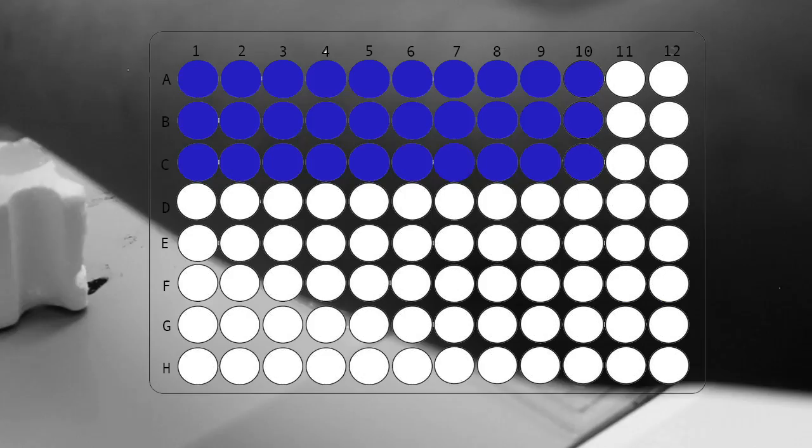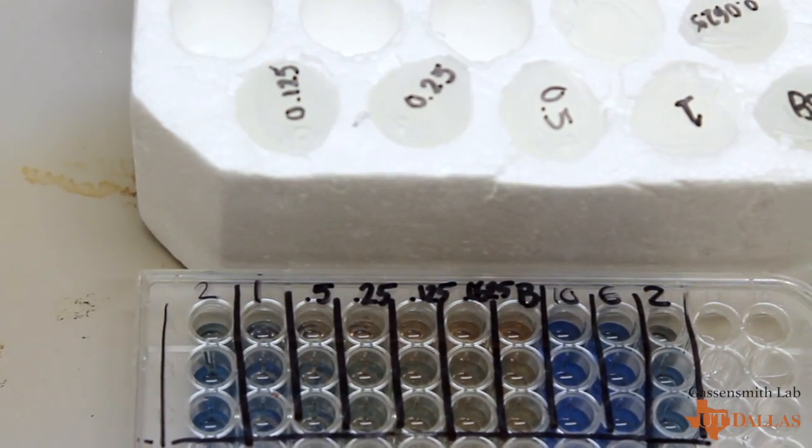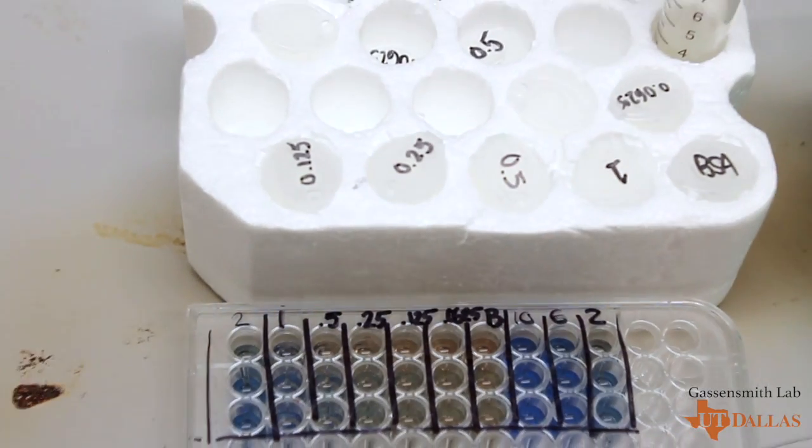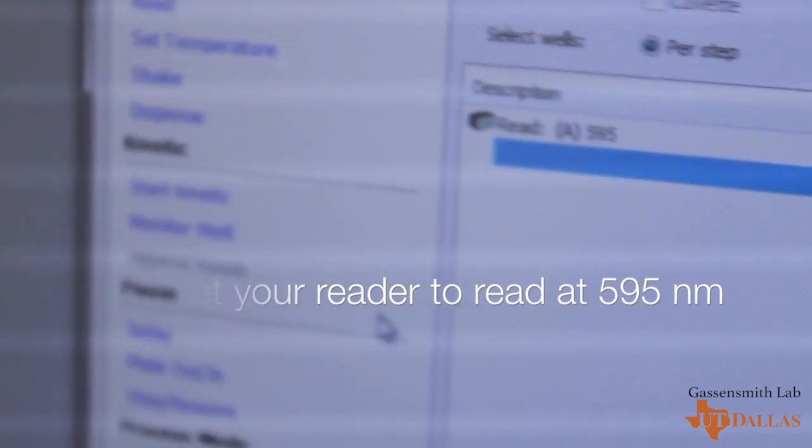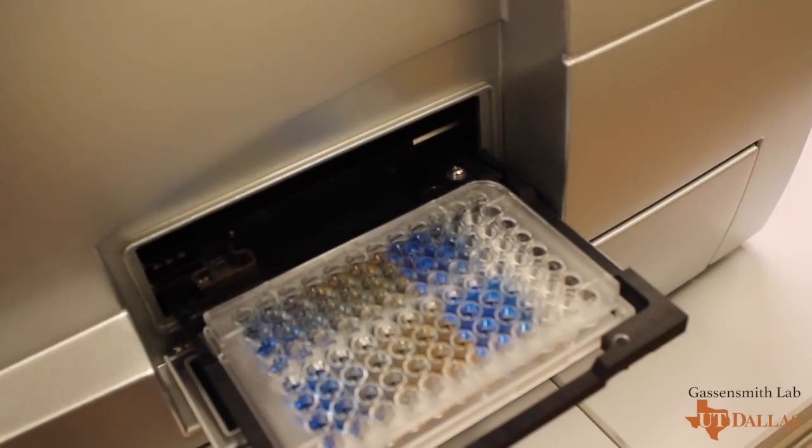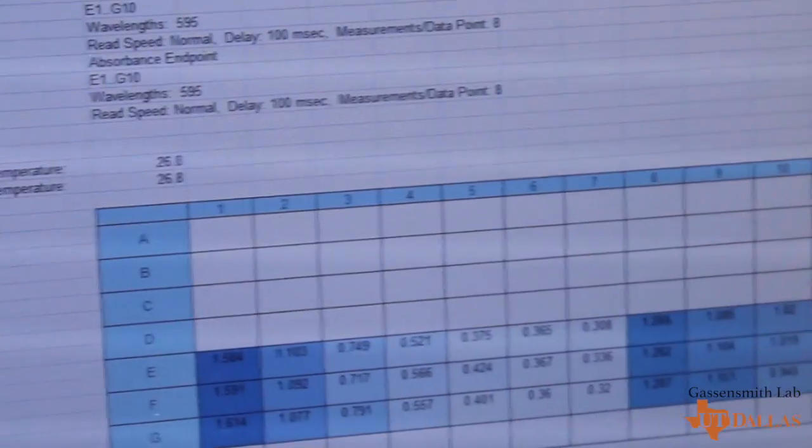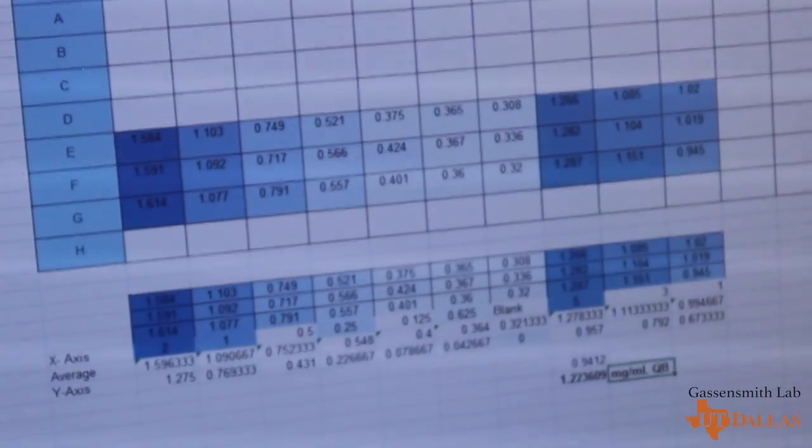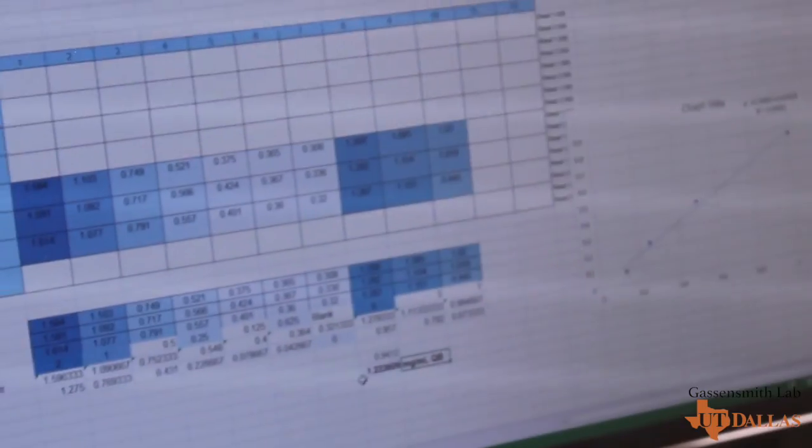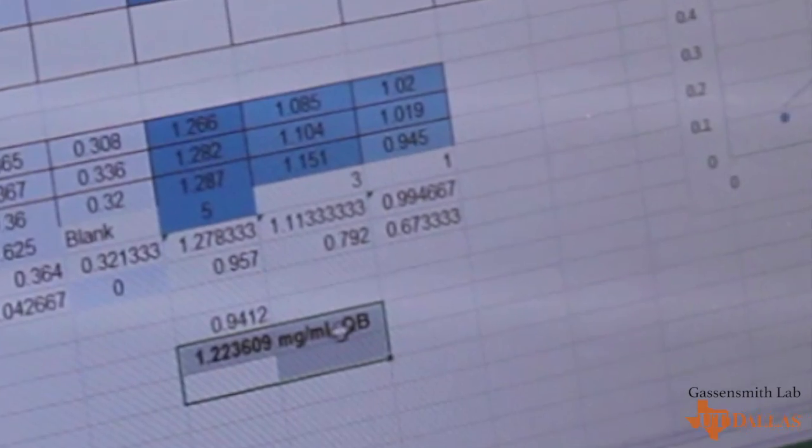Once this is completed, add 200 microliters of Coomassie blue staining to all the used wells. Next, place the microplate into the microplate reader and set the reading wavelength to 595 nanometers. Gather your data and create a graph using the average of Q-beta values to find your concentration from your y equals mx plus b equation. Write down the concentration of your purified Q-beta on the tube. You've now successfully made Q-beta.